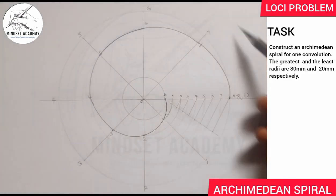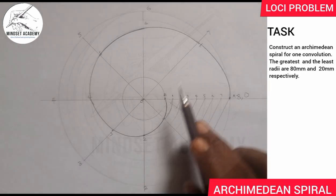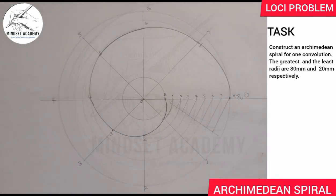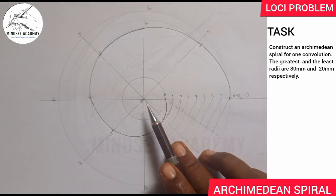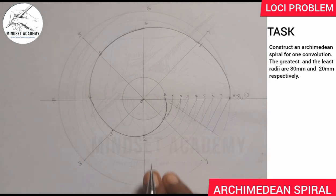This is the completed Archimedean spiral. One convolution means starting from zero, going outward, and returning to zero — that is one full convolution. In most cases you may also be asked to find the normal and the tangent. To find the normal, subtract the smallest radius from the largest and divide by 2π: (80 − 20) / (2π) = 60 / 6.28 ≈ 9.6, approximately 10.